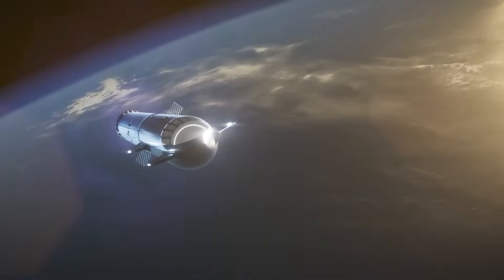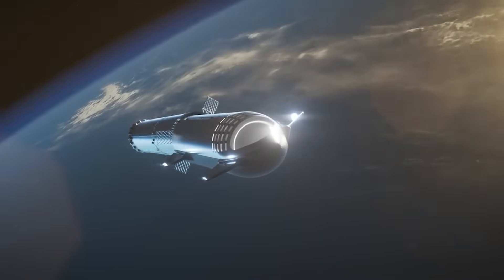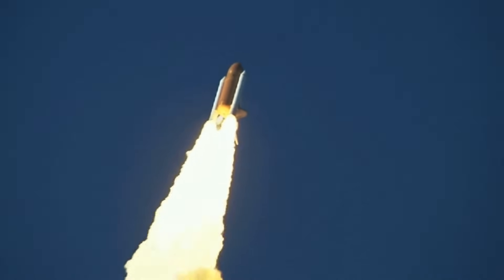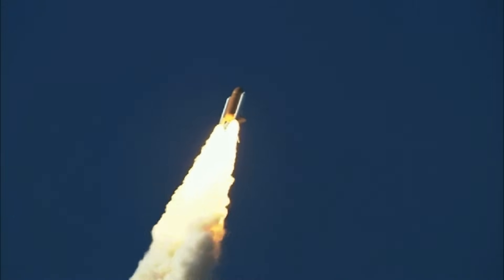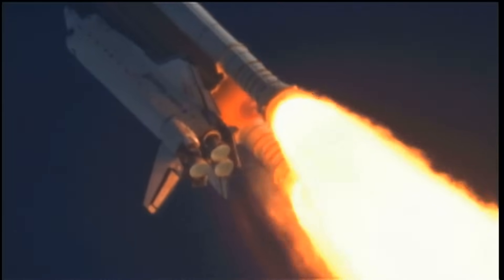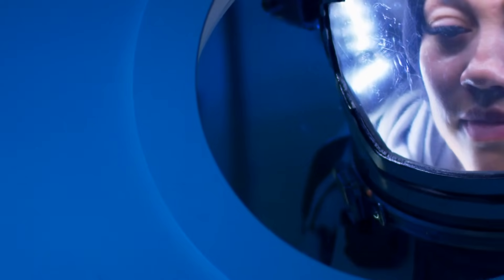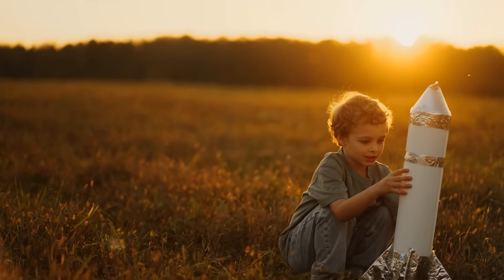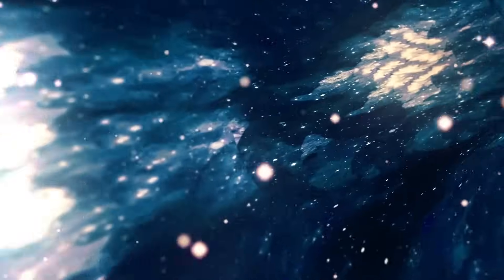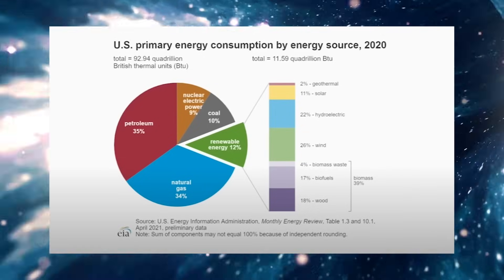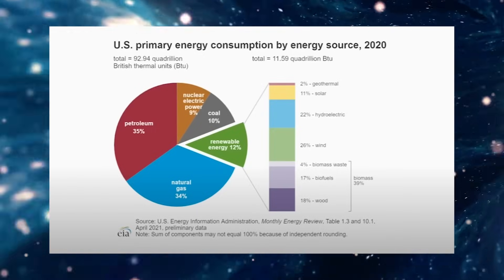Any moving object possesses energy due to its motion, known as kinetic energy in physics. To accelerate, one must increase kinetic energy. The challenge lies in the substantial amount of energy required to boost speed. Making something go twice as fast necessitates four times the energy, and the trend continues exponentially. Consider a teenager weighing 110 pounds. Propelling them to one percent of the speed of light would demand a staggering 200 trillion joules. To put this in perspective, it's roughly the same amount of energy consumed by two million people in the U.S. in a day.